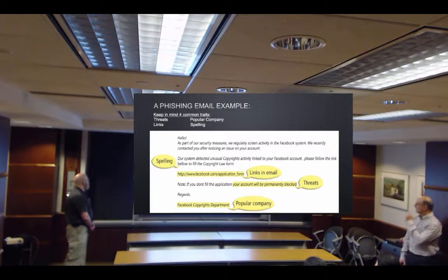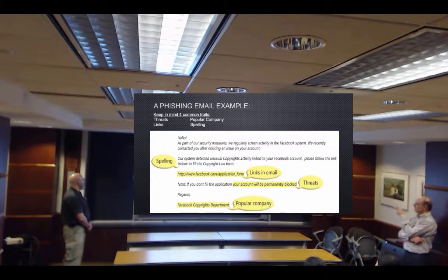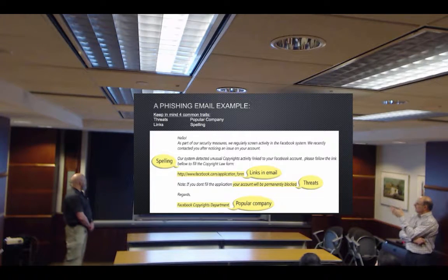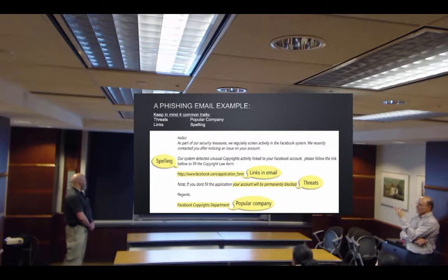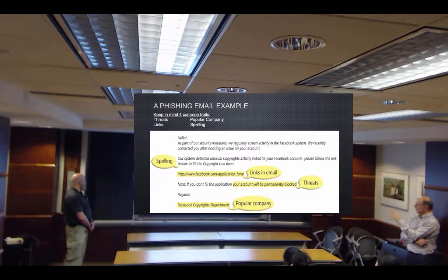Here's a phishing email example. Keep in mind these four common traits. When you get an email like this, look for: threats, links, a popular company name, and spelling errors. This example is about Facebook. Those are the four things you look for in an email that a legitimate sender wouldn't do.